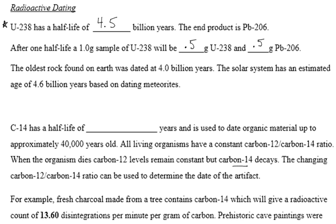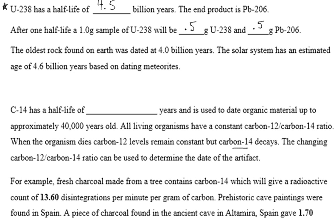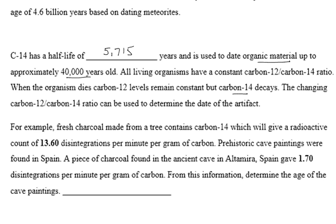A second element used in dating is carbon-14. Carbon-14 has a half-life, according to Table N, of 5,715 years. Unlike U-238, carbon-14 dates organic material, and it's only good for samples up to about 40,000 years old.